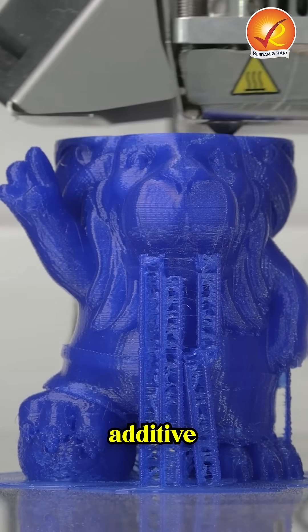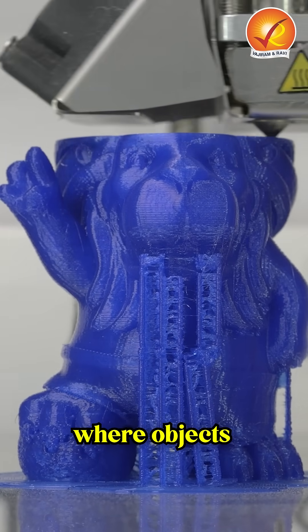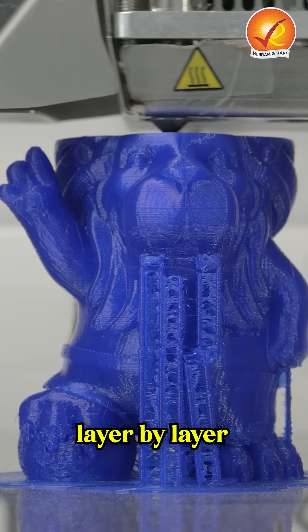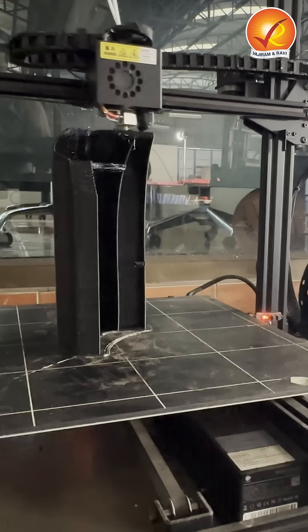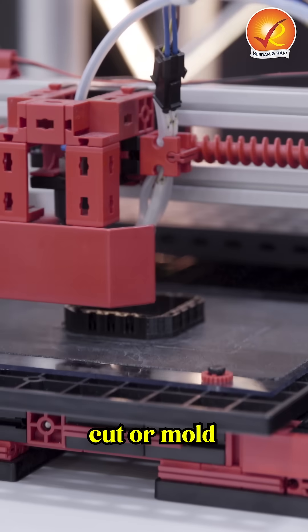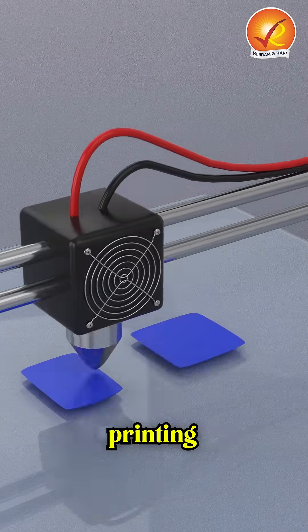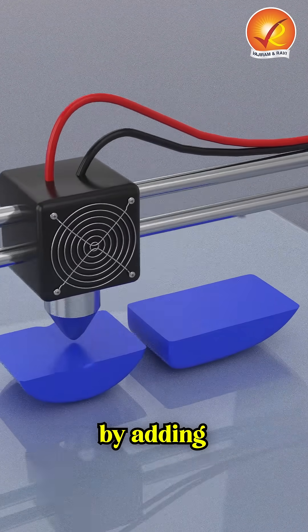3D printing, also known as additive manufacturing, is a process where objects are created layer by layer from digital designs. Unlike traditional manufacturing methods that cut or mold materials, 3D printing builds objects by adding material, making it ideal for creating complex shapes and reducing waste.